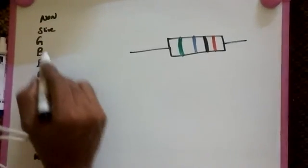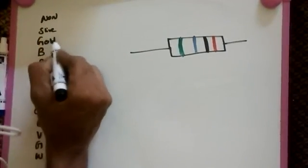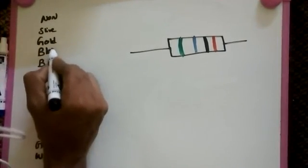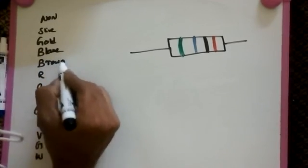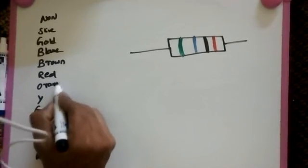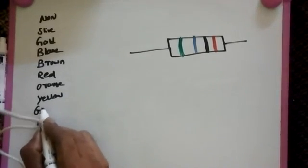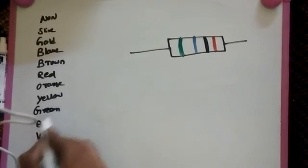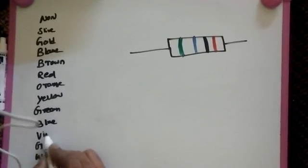Now see this is for none, silver and gold, black, brown, red, orange, yellow, green, blue, violet, gray, white. This is for color names.